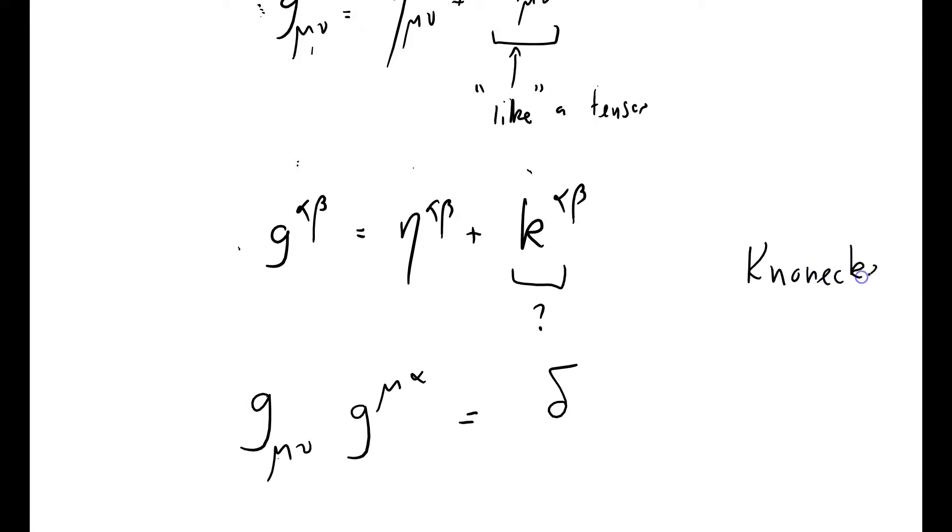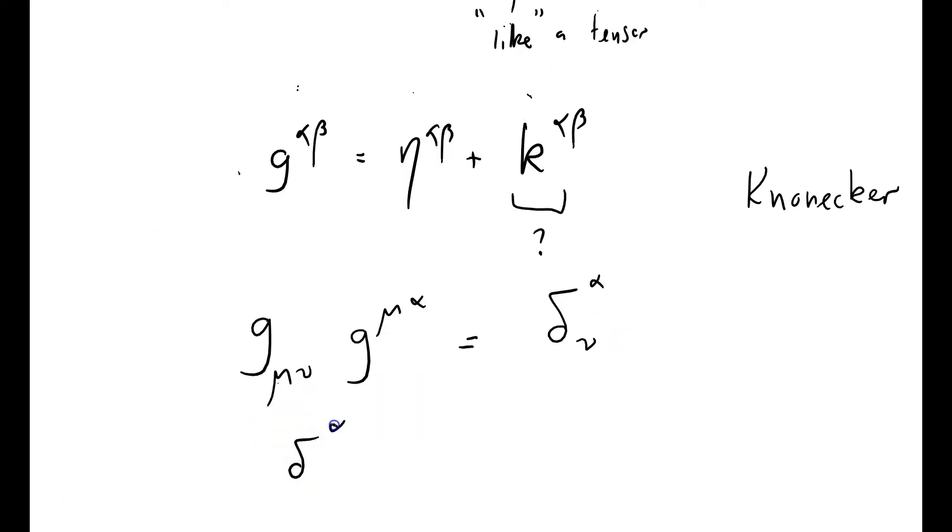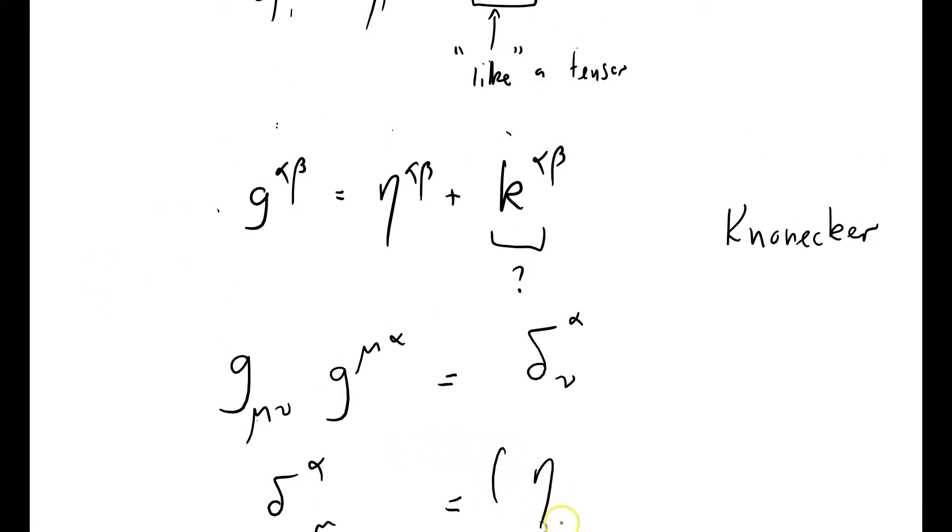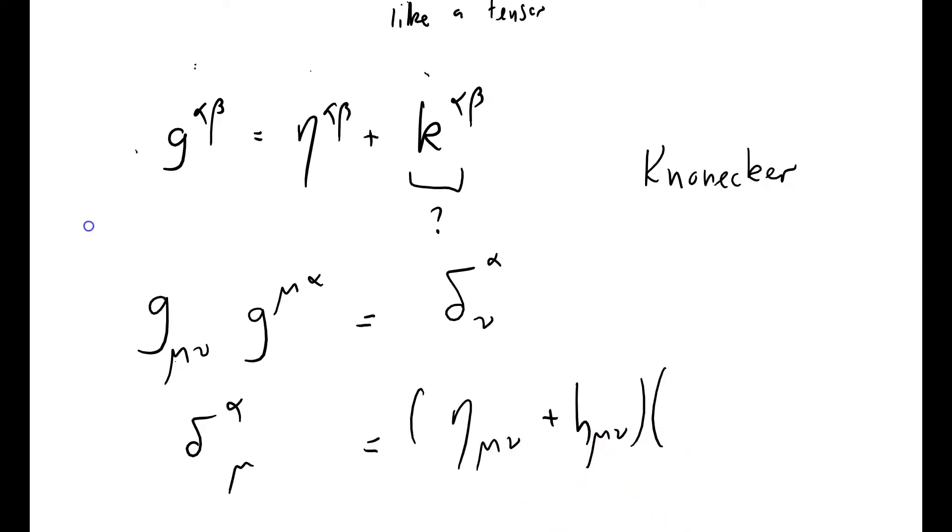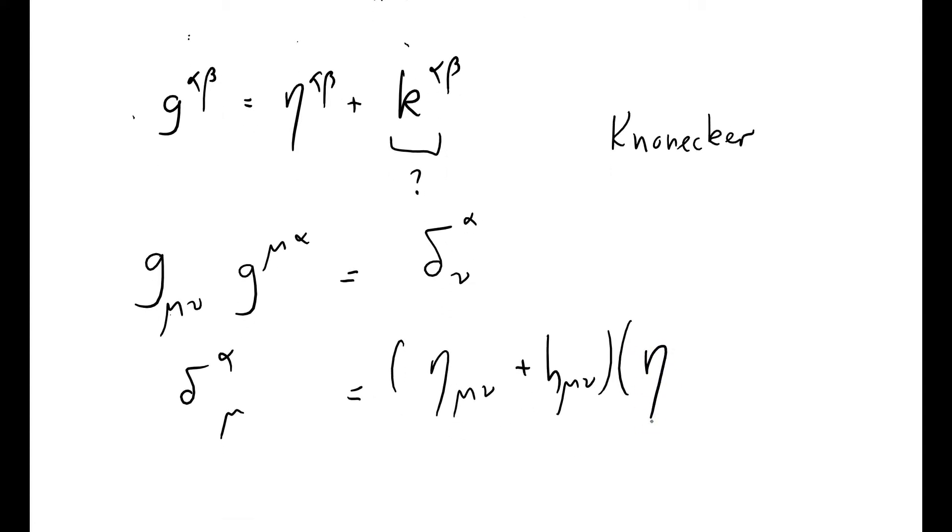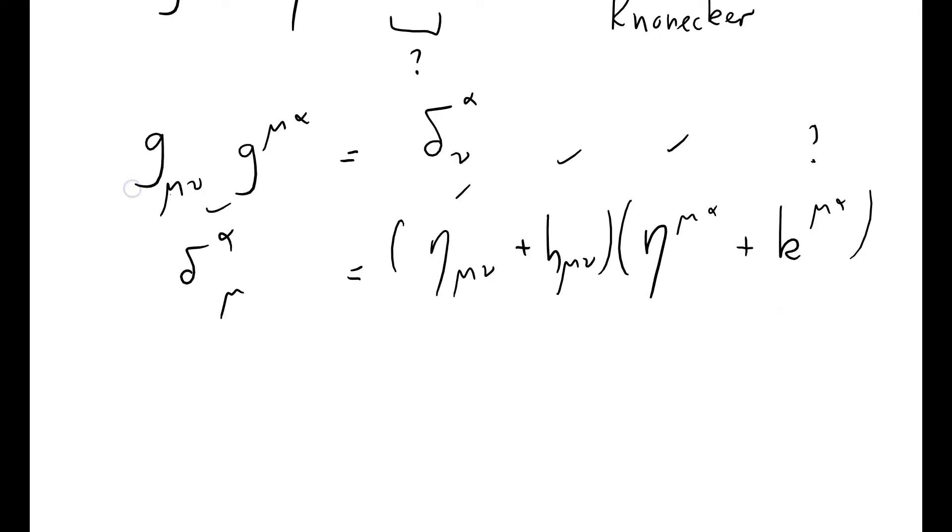Get my Christoffels and my Kroneckers mixed up there. What have we got left? We've got a nu down there, the mu is summed over, and an alpha. Okay, so delta alpha nu equals G mu nu from here is just eta mu nu plus H mu nu times, from this equation here, eta, and one of my indices, I've got mu alpha, mu alpha, plus K mu alpha, and we don't know that. We know this, we know this, we know this, and I guess we know that.